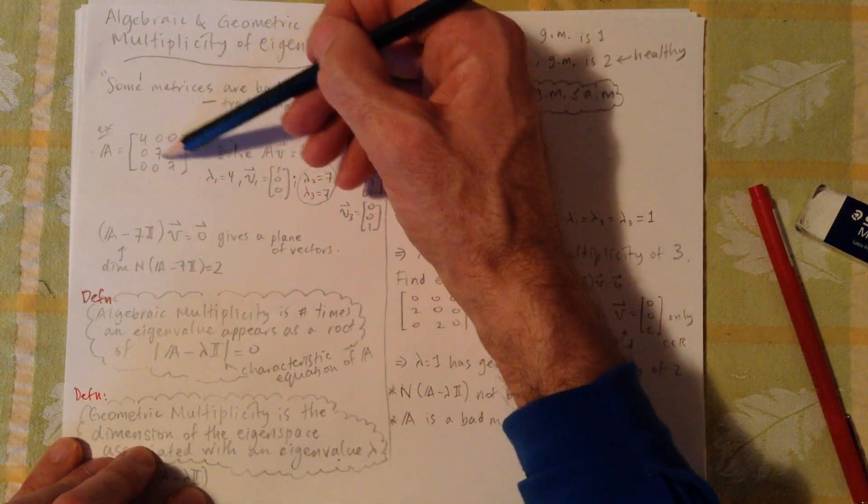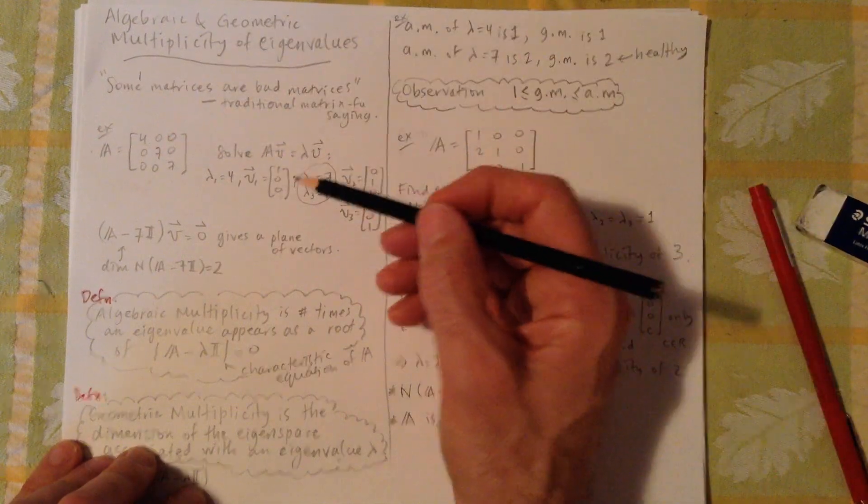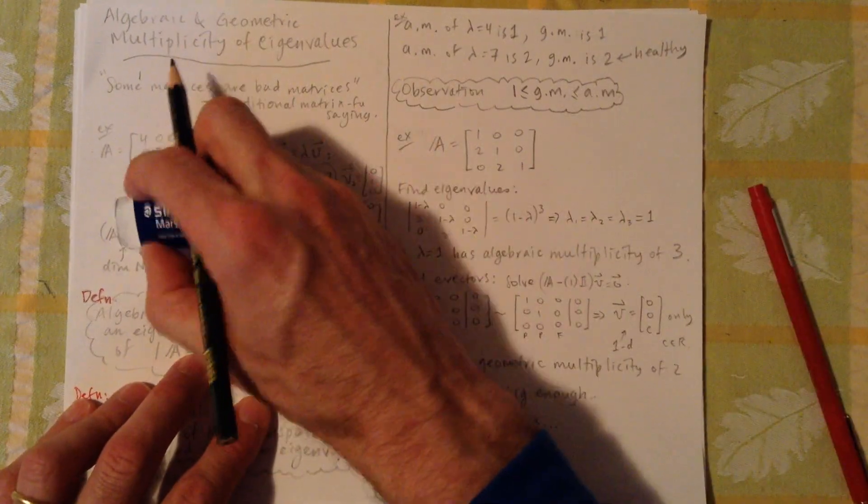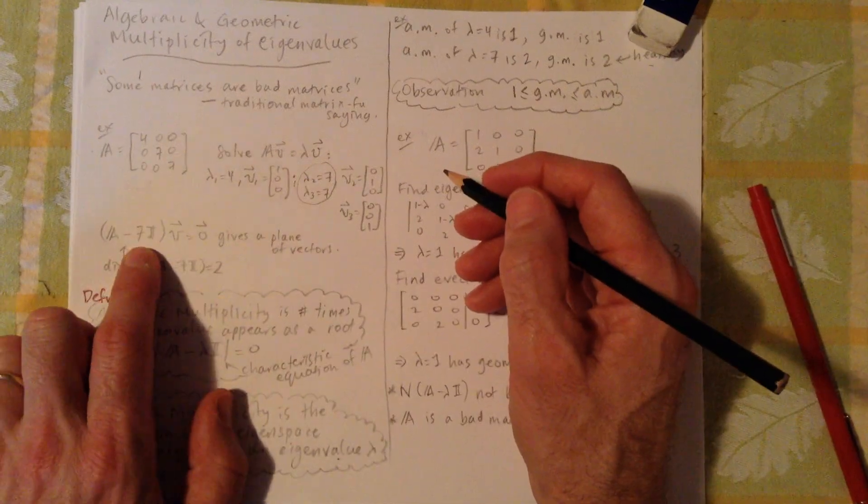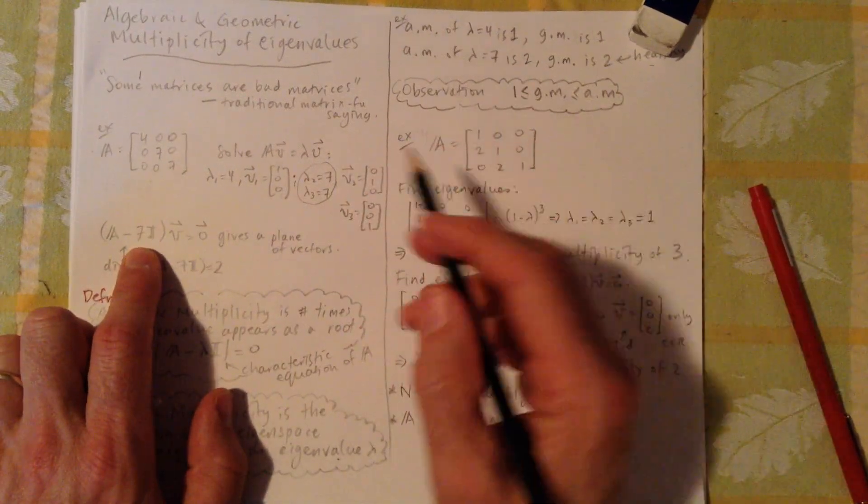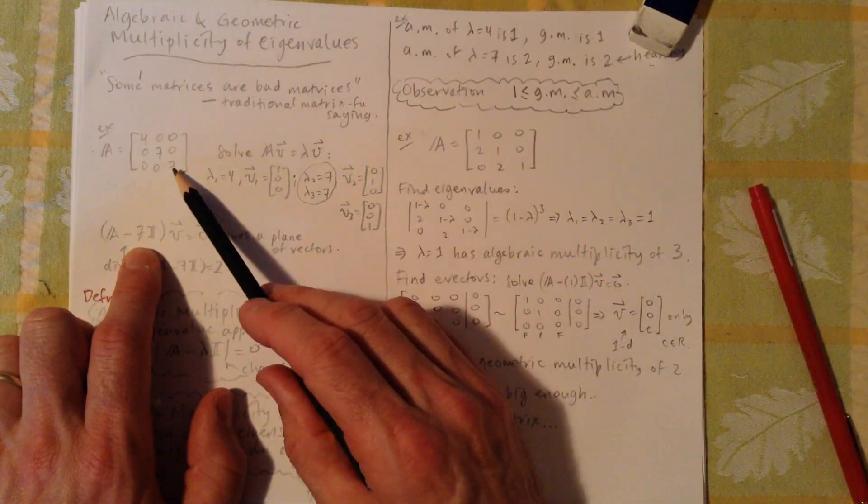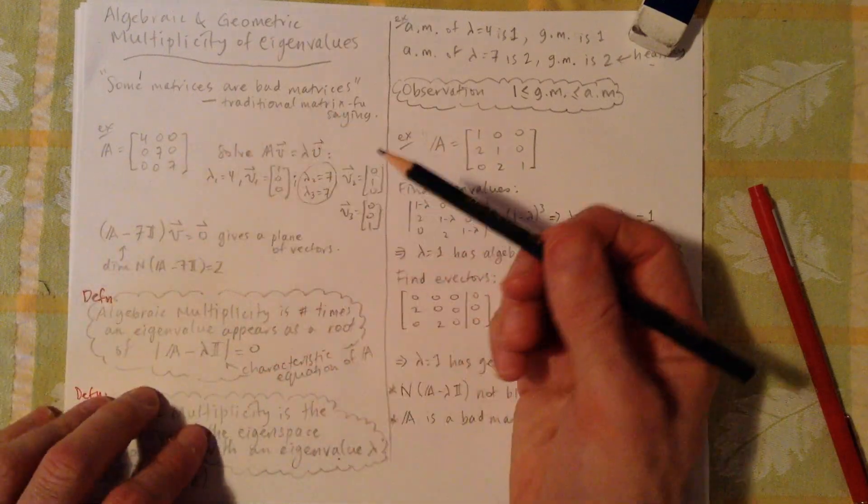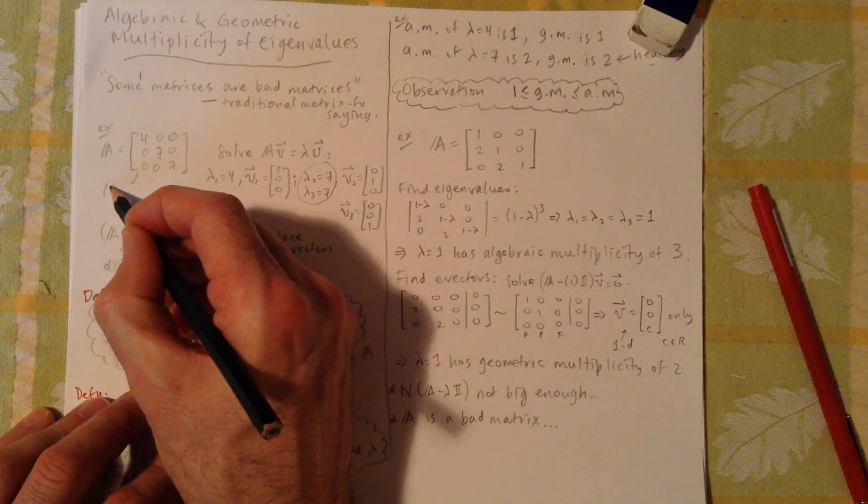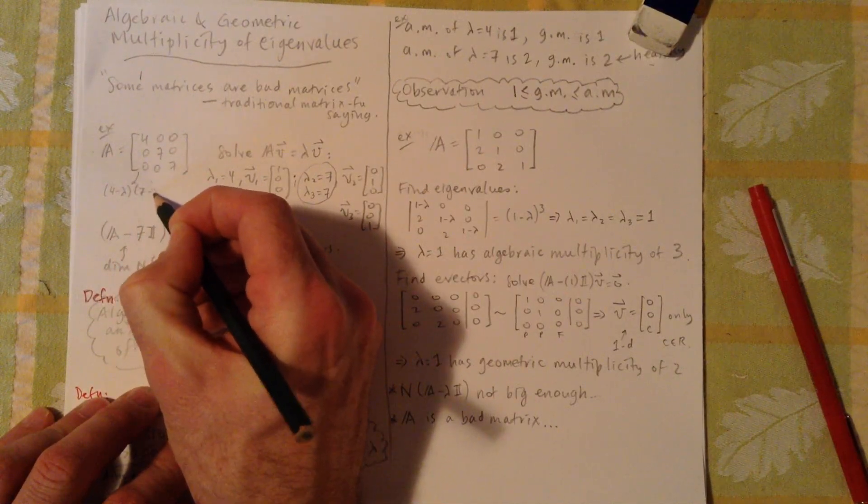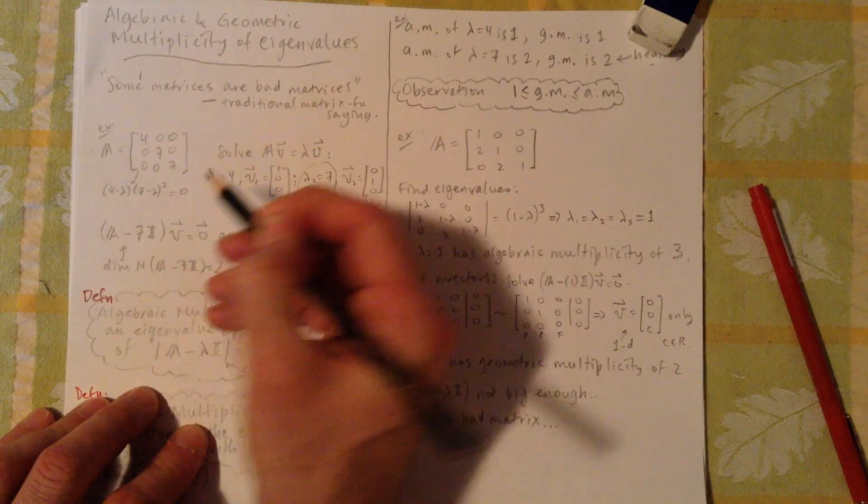And then we have these two 7s here. So the deal is when we go to solve, let me make that more of a 7. When we go to solve for the eigenvectors, we've got 7 twice, right? 7 appeared twice in the characteristic equation.